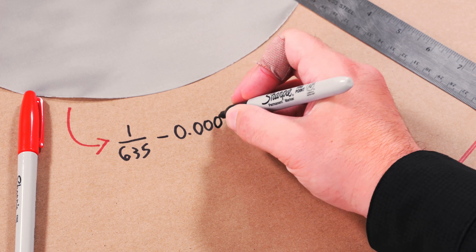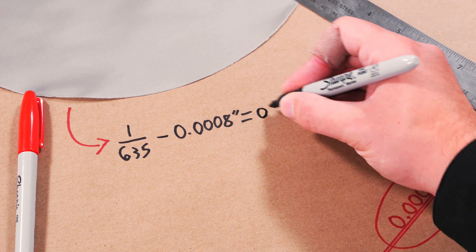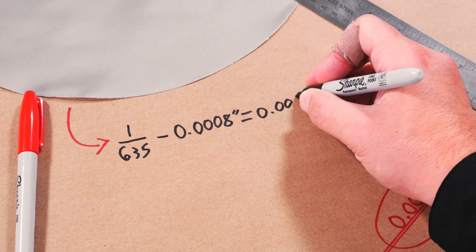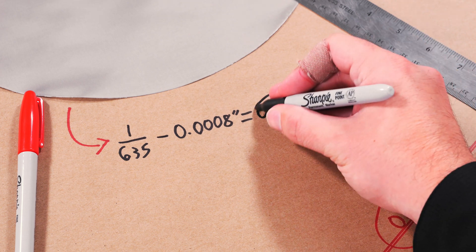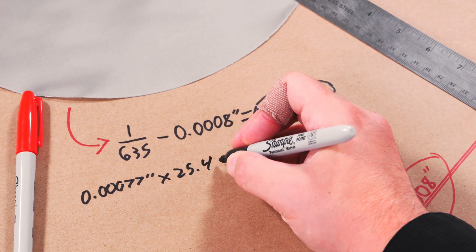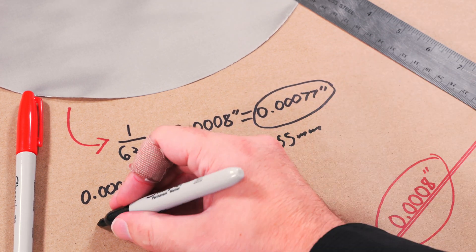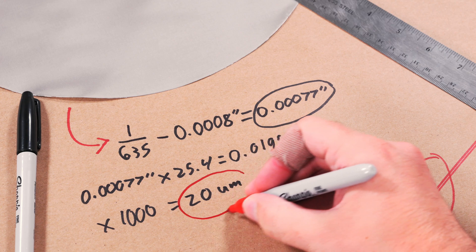and if we subtract that into 0.0008 inches, we get the incredibly tiny opening size of 0.00077 inches. And if we multiply that by 25.4 and then again by 1,000, we get 20 micron.